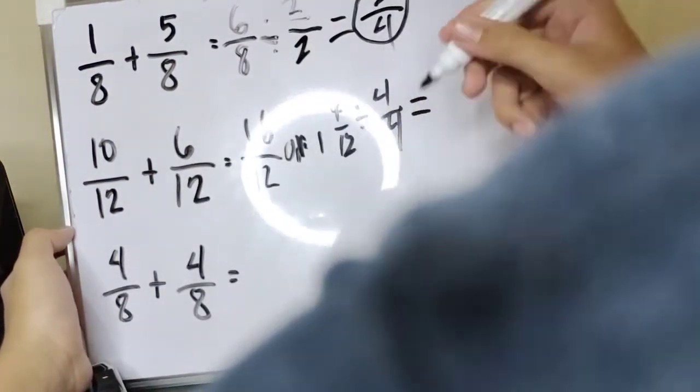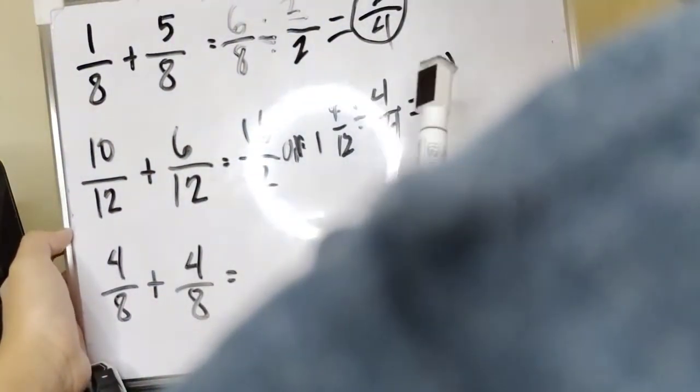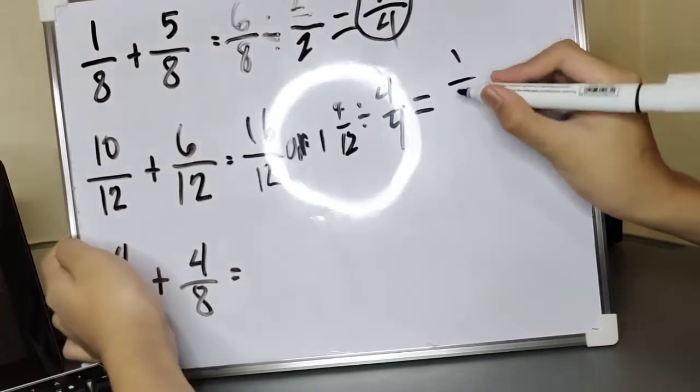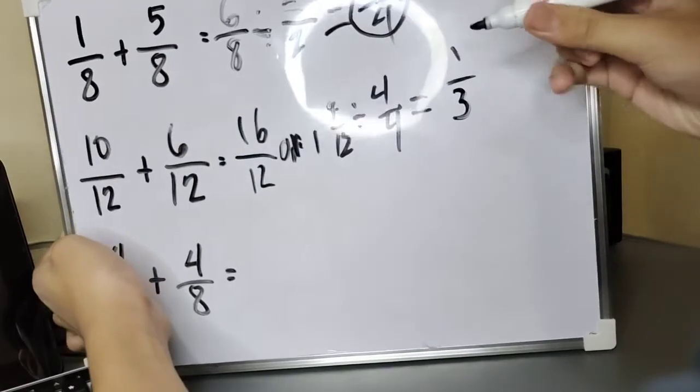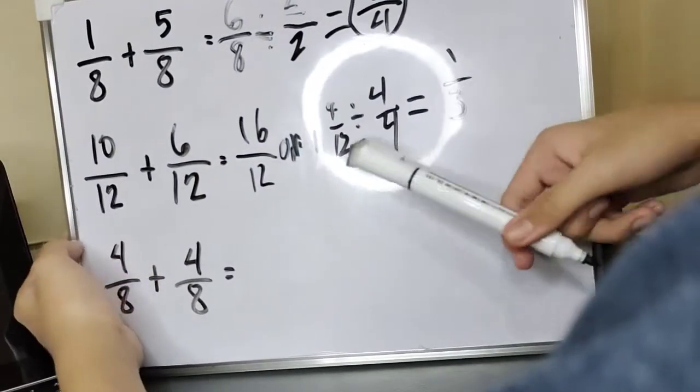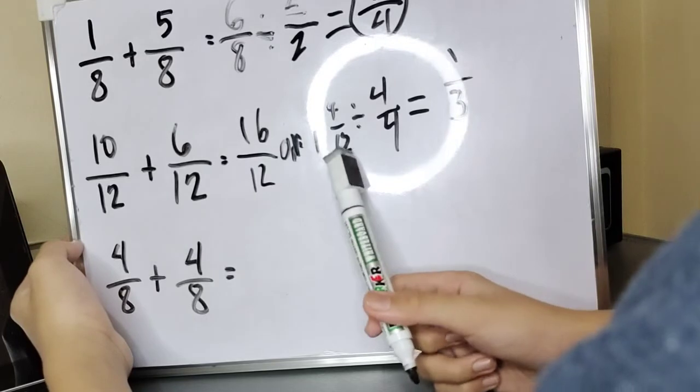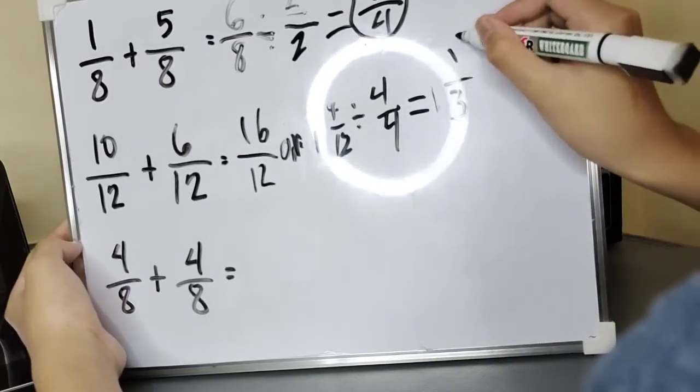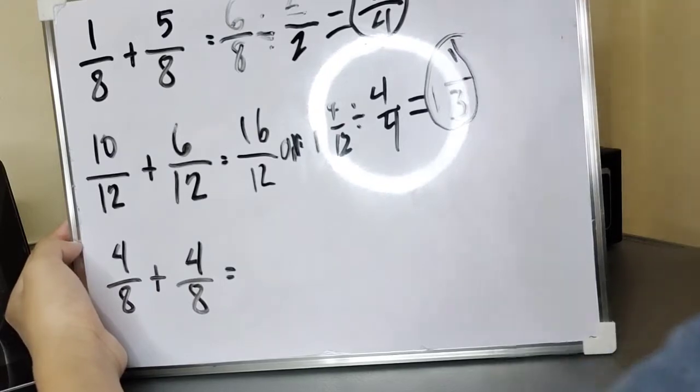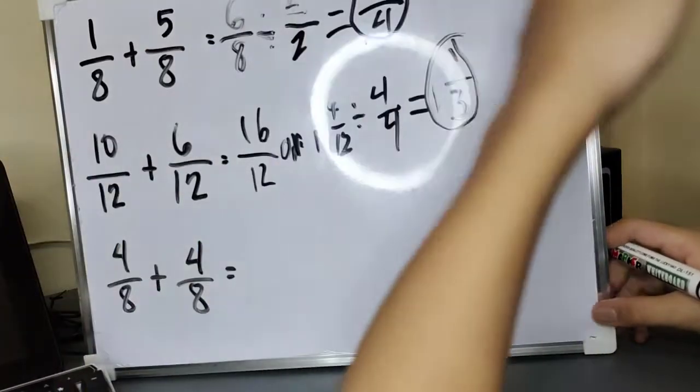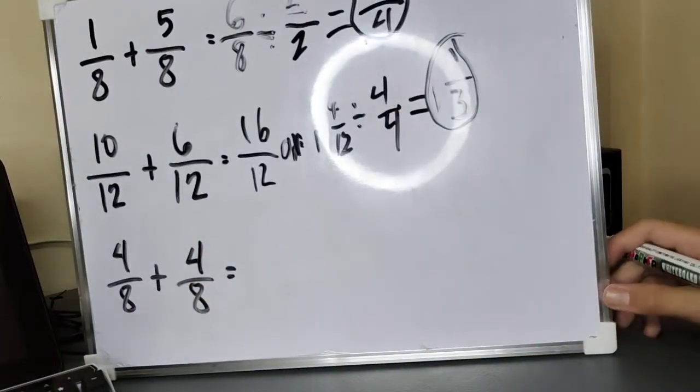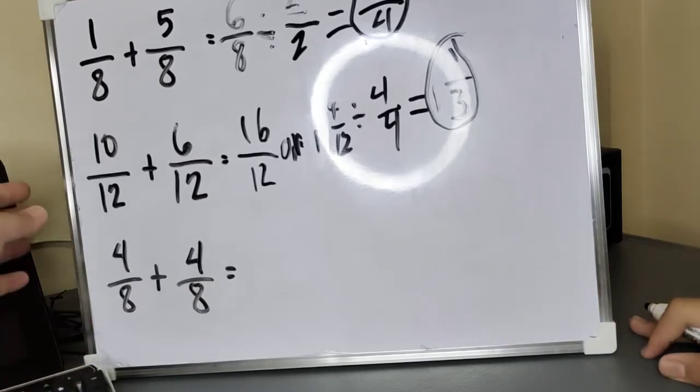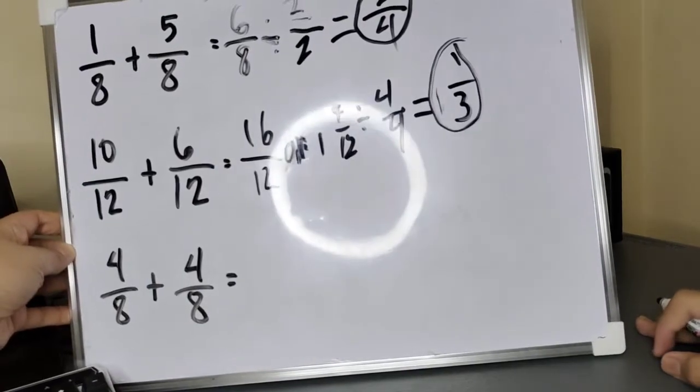4 divide 4, 1. 12 divide 4. 3. Pagkatapos, i-divide ang dalawang fraction. Kopiayin lang ulit ang whole number. So, 10 plus 12, 10/12 plus 6/12 equals 16/12 or 1 and 1 third. 1 and 1 third ang lowest term niya.